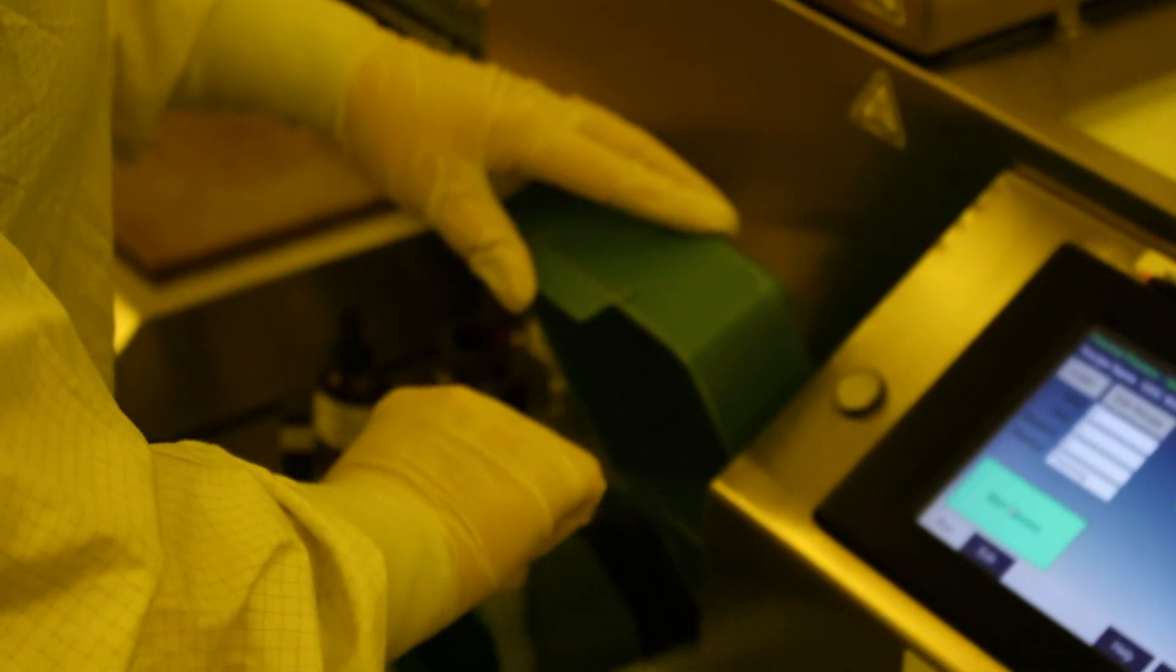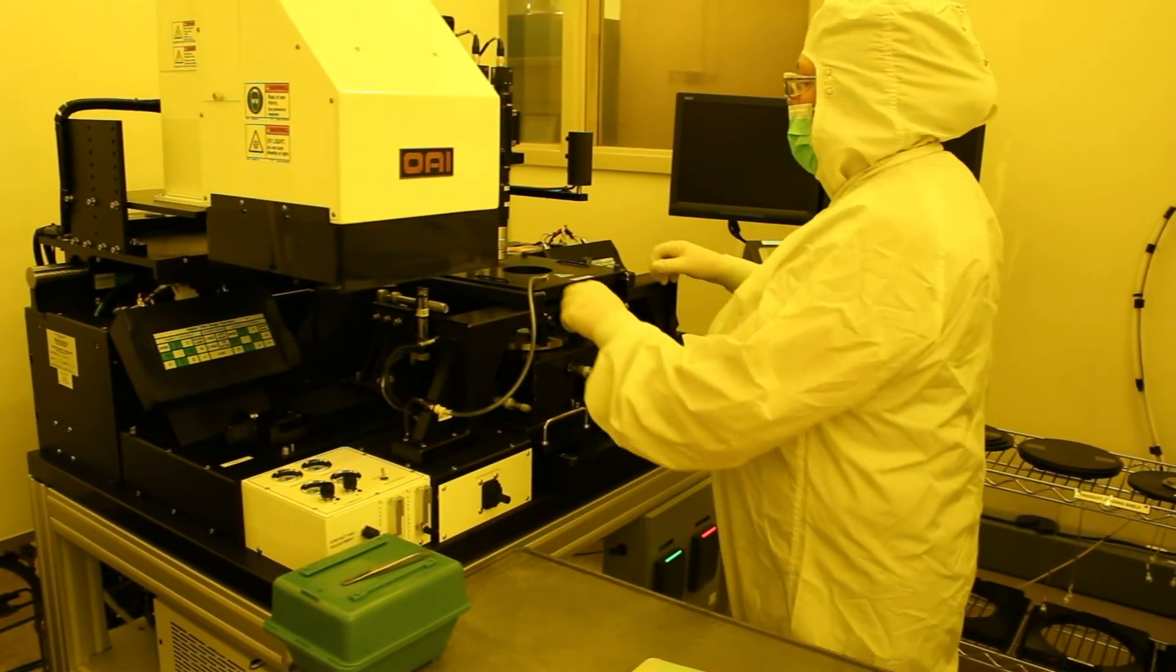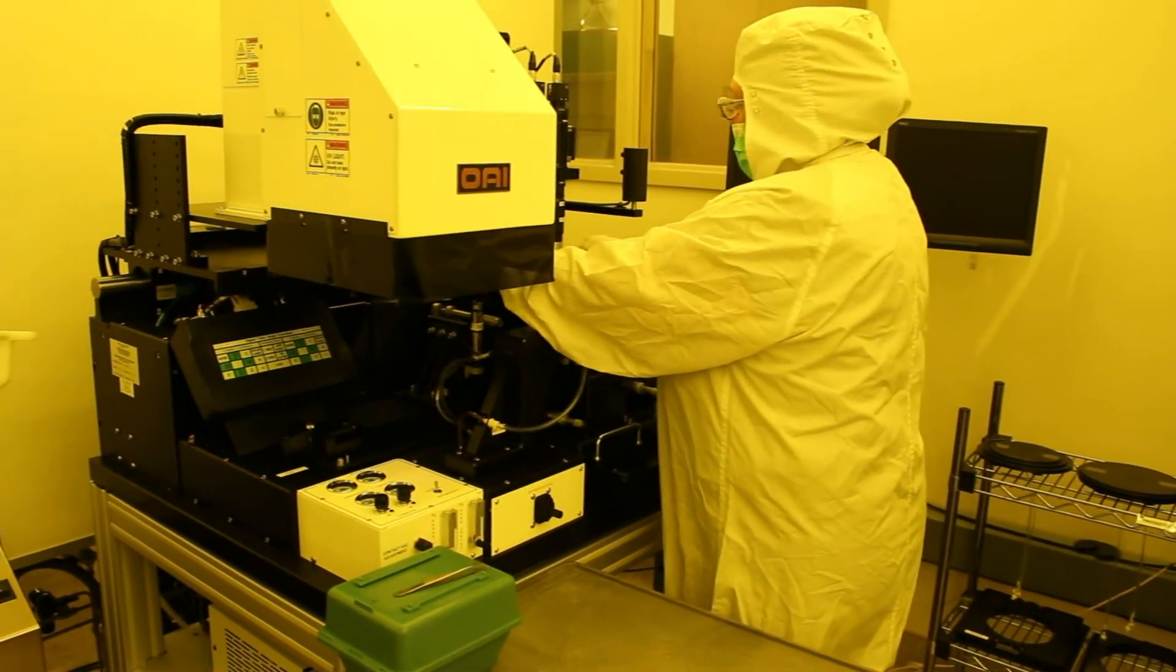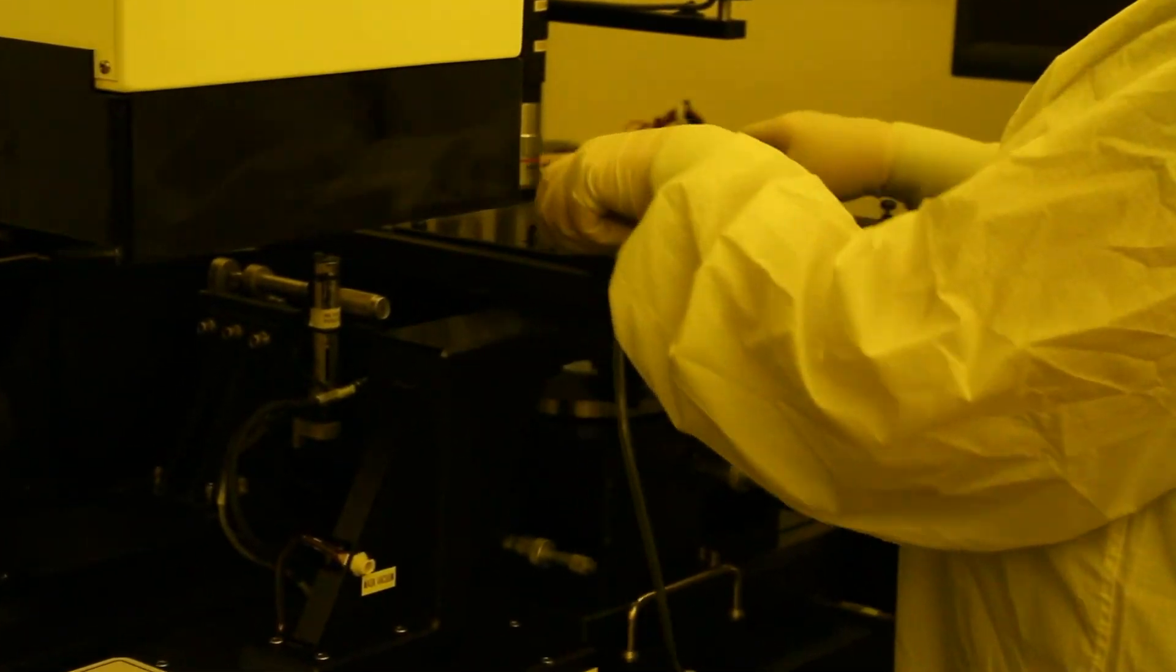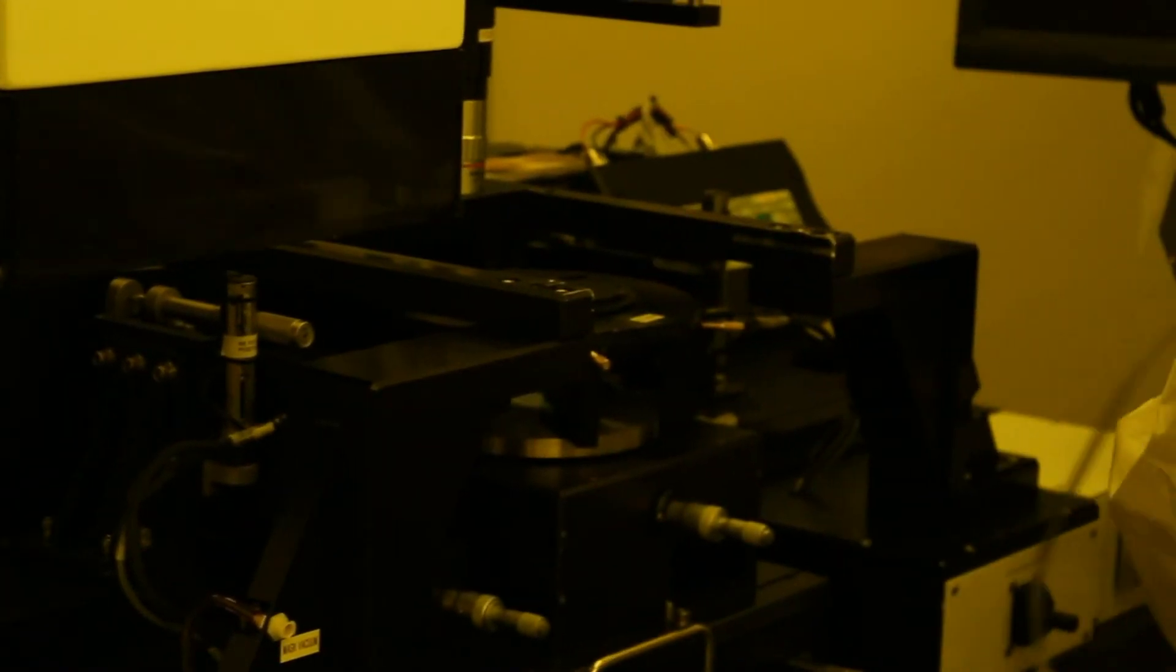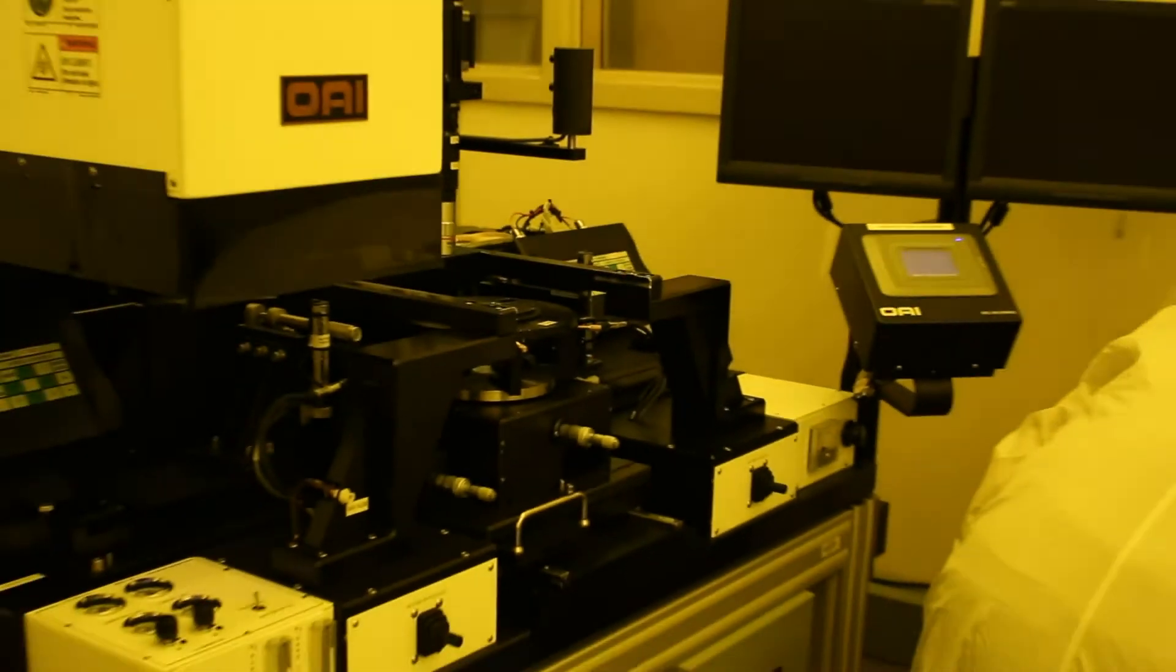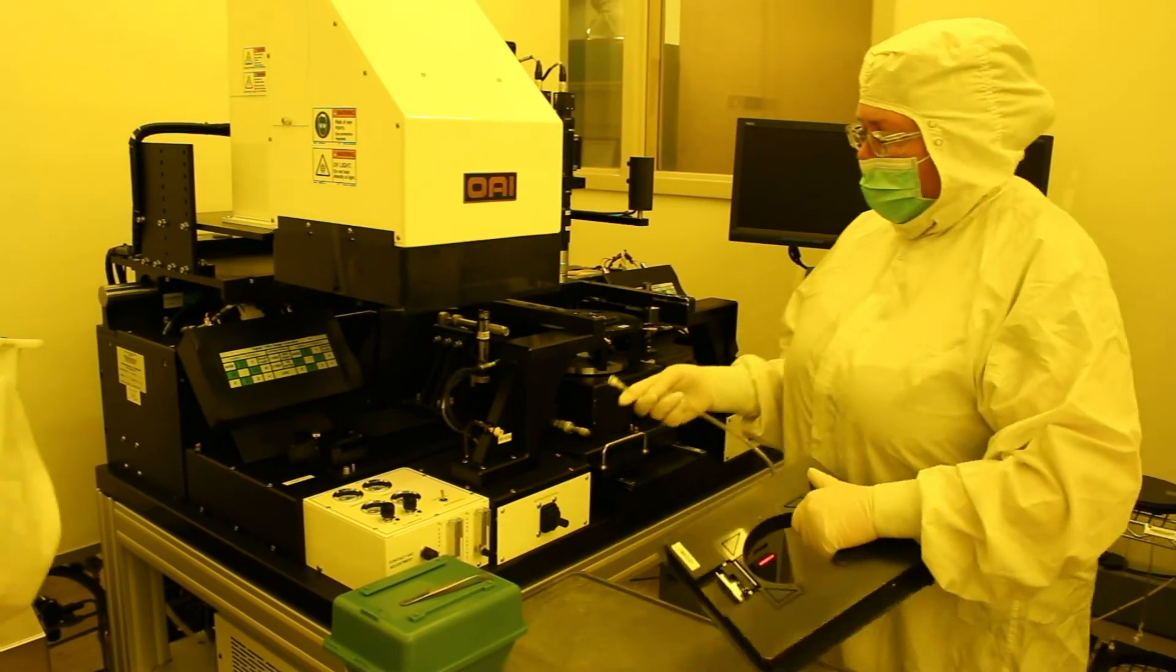Now we're ready for the actual exposure of the wafer. The exposure of the wafer will occur on an 808 OAI aligner. It is an aligner that can expose from pieces all the way up to 8-inch wafers. It's very versatile. It also has varying mask sizes it can use. Typically, the mask size that we use is a 5-inch mask. In this case, we're using it on a 4-inch wafer.